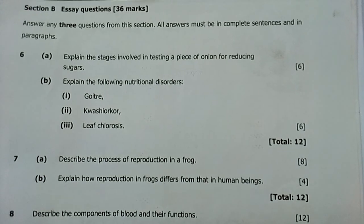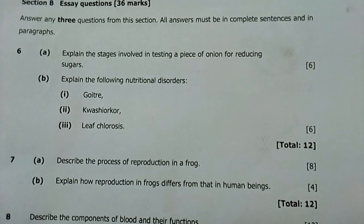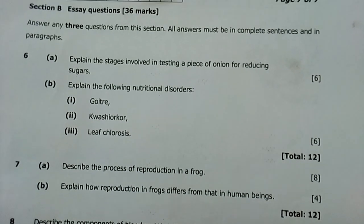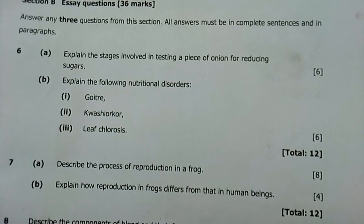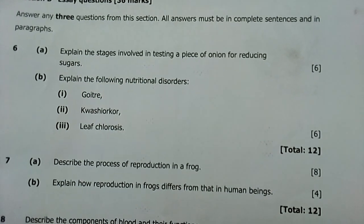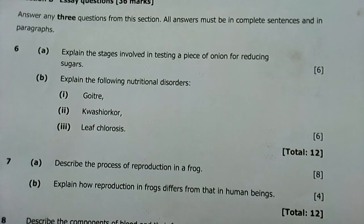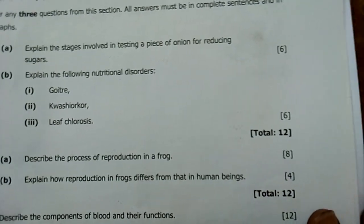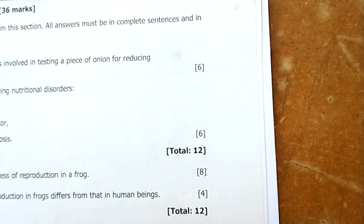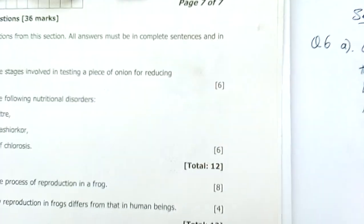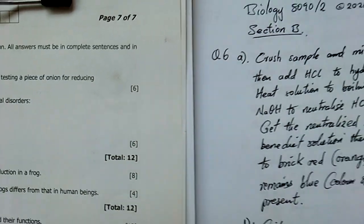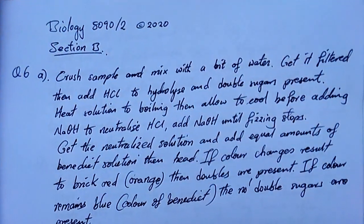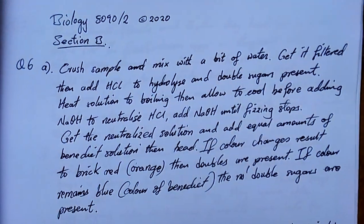So answer three questions, but we'll answer all of them just for the sake of revision. So Question 6A: explain the stages involved in testing a piece of onion for reducing sugars. I had to write so much — you have to pause a little bit to read through my writing.